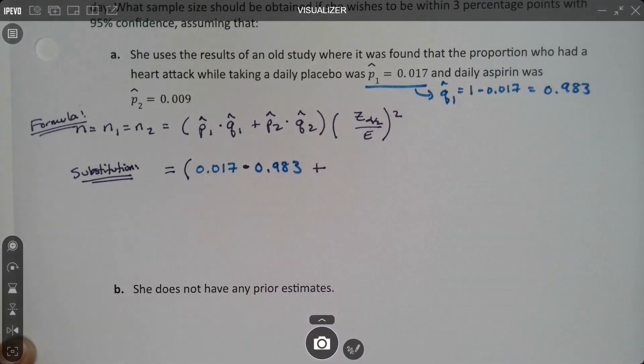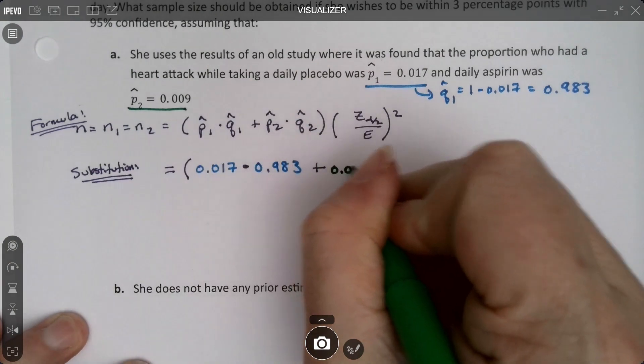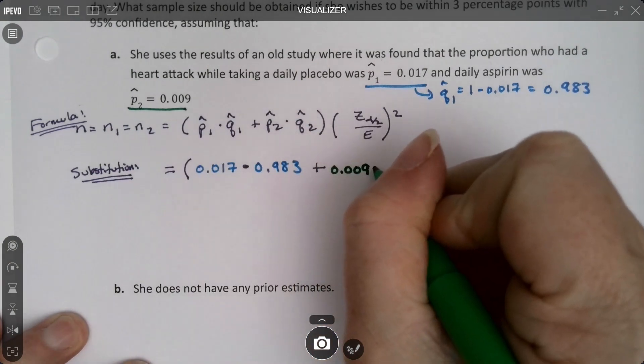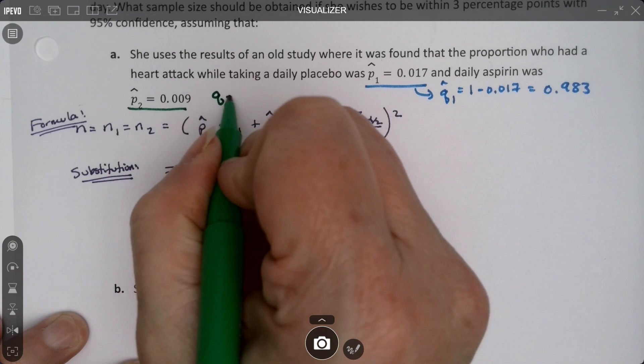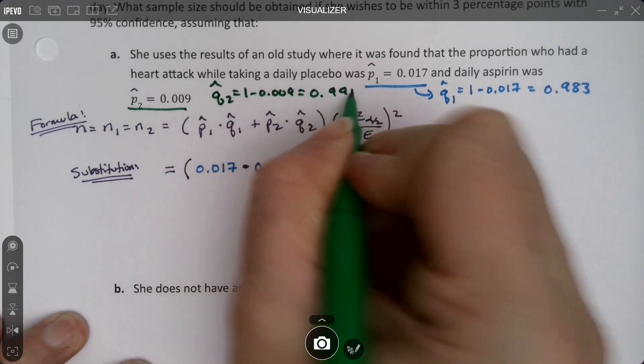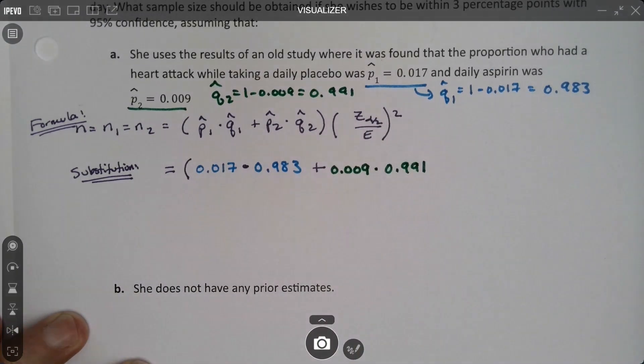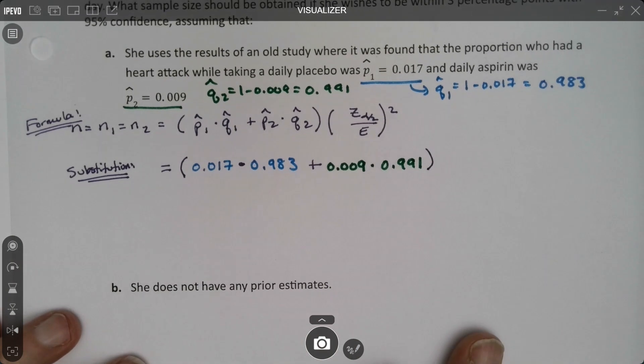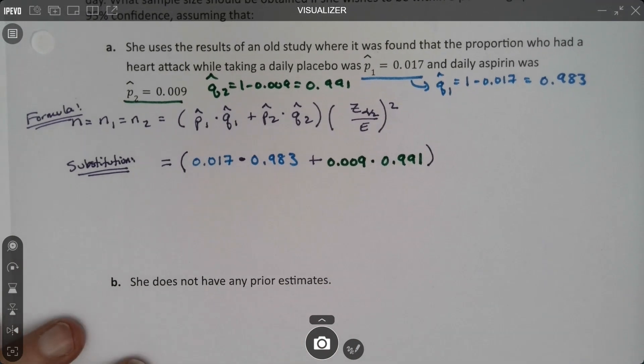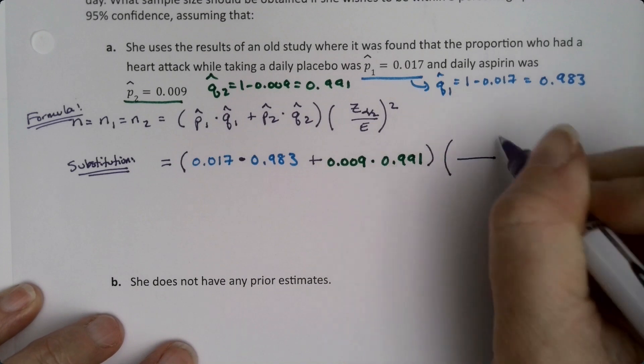Now P2 hat is right here. 0.009. And then I saw that Q2 hat, which I'll write right here, which was 1 minus 0.009, is 0.991. So I'm going to put that one right there. 991. Okay, so I've done the first parentheses. Alright, now I need the Z and the error, and I need to square it.